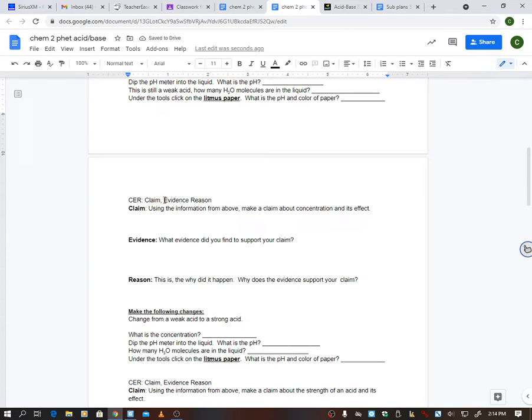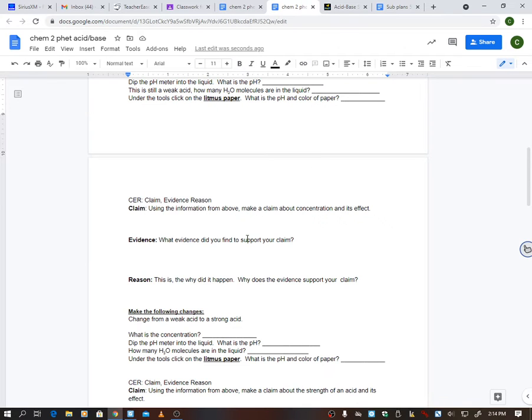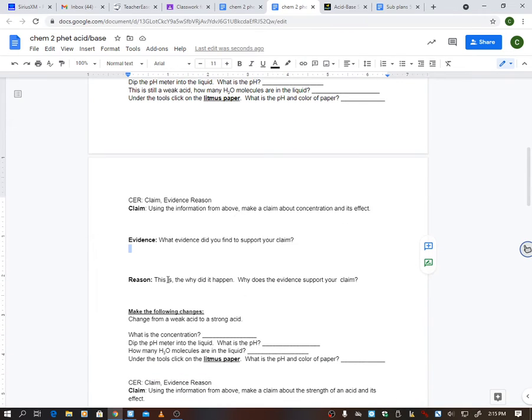Okay? Now, once you have finished that – let me drag this up – once you finish that, we have a CER, which I do this with my Biology 2 class quite a bit, but it's Claim, Evidence, and Reasoning. So, it says claim. Using the information from above, make a claim about the concentration and its effect. So, what happens when my concentration – what does my concentration do? You've got to make a claim about that. Whatever your claim is, like, how does that concentration affect everything else? Then you need to provide evidence that supports that claim. Now, the evidence is literally coming from this up here. The evidence could be, well, my litmus paper turned this color, or I have this many H3O molecules. That's evidence.